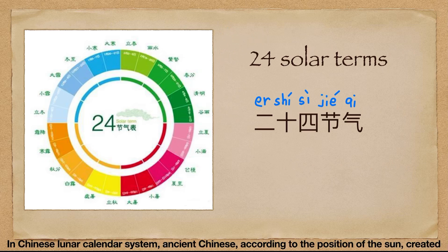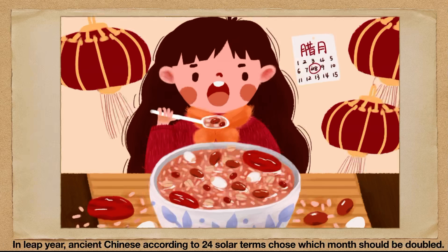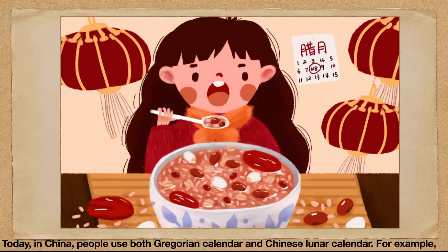In the Chinese lunar calendar system, ancient Chinese, according to the position of the sun, created 二十四节气, the 24 solar terms, to help them perform agricultural activities. In a leap year, ancient Chinese use the 24 solar terms to choose which month should be doubled. Today in China, people use both the Gregorian calendar and the Chinese lunar calendar.